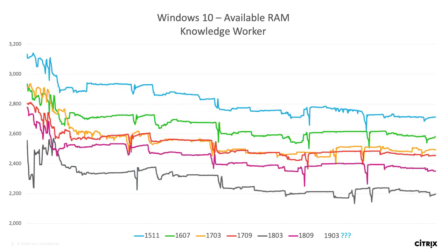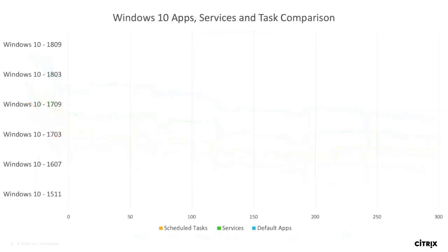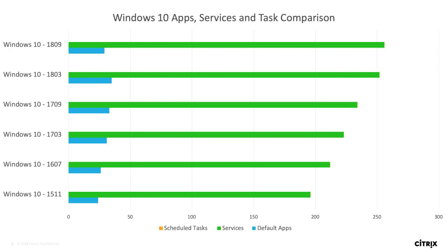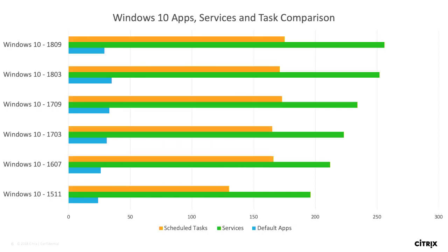This increase is quite significant — we're talking hundreds of megabytes of change, which has a real impact on large-scale deployments. One reason is there are a lot more services and scheduled tasks running under the hood with each Windows 10 release. One big issue with the last release is OneDrive — it's quite a performance hog. If we remove OneDrive, CPU consumption gets a lot closer to previous versions. You need to pay close attention to whether you run it by default or disable it.